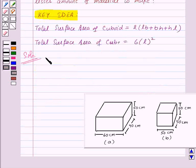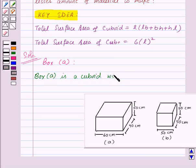Let us consider box A first. Now, as we can observe that box A is a cuboid, so we will write box A is a cuboid with length equal to 60 cm.